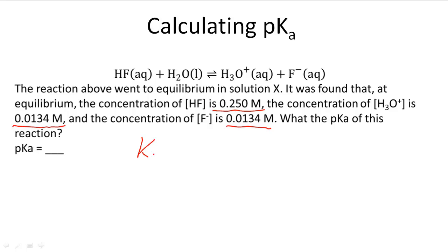So first of all we have to find the Ka and then we find the pKa. The Ka is going to come from multiplying the concentration of hydronium times the fluoride ion concentration divided by the concentration of the acid HF.